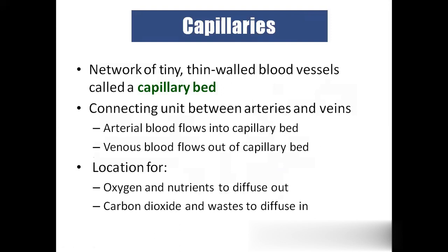Capillaries are very small and thin blood vessels — the connecting point between artery and vein. The aorta divides into arteries, arteries into arterioles, arterioles into capillaries. Capillaries unite to form venules, venules unite to form veins, and veins unite to form the superior vena cava and inferior vena cava. From the capillaries, oxygen and carbon dioxide diffuse, and whatever contents are needed go out to the tissues.